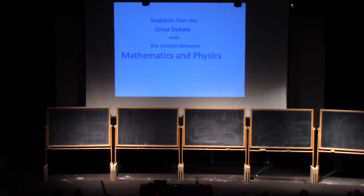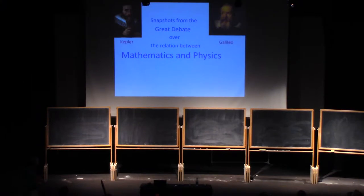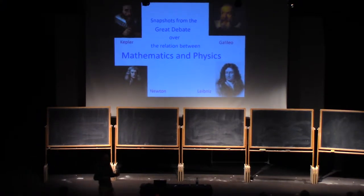I'm going to show you just a few snapshots from the great debate over the relationship between physics and mathematics. This is a huge subject, so we're going to be tourists. If we go back to the beginning of a modern scientific era with Kepler, Galileo, Newton, and Leibniz, we could ask: were these mathematicians or physicists? The answer is neither. They were natural philosophers.